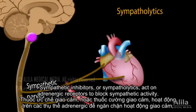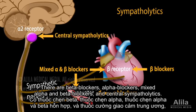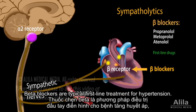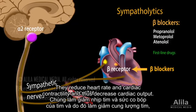Sympathetic inhibitors, or sympatholytics, act on adrenergic receptors to block sympathetic activity. There are beta blockers, alpha blockers, mixed alpha and beta blockers, and central sympatholytics. Beta blockers are typical first-line treatment for hypertension. They reduce heart rate and cardiac contractility, and thus decrease cardiac output.